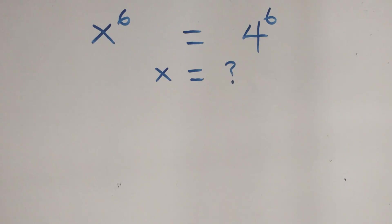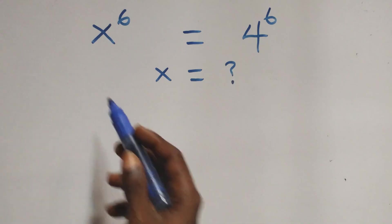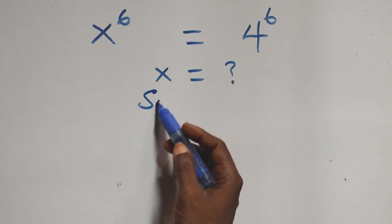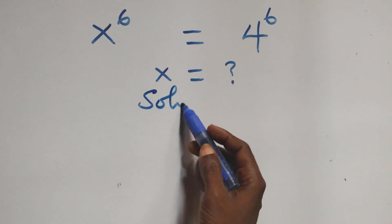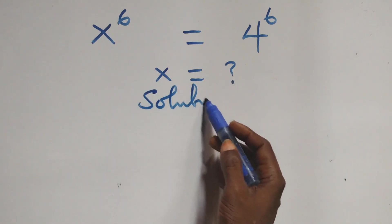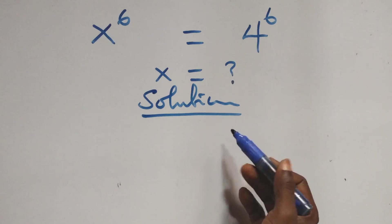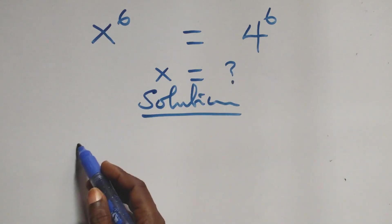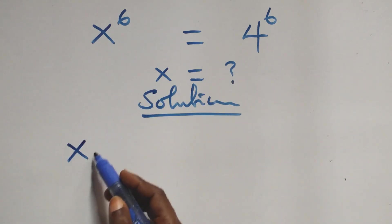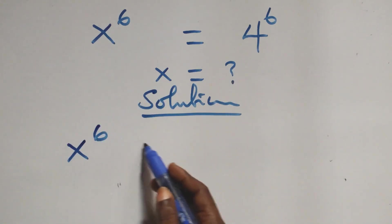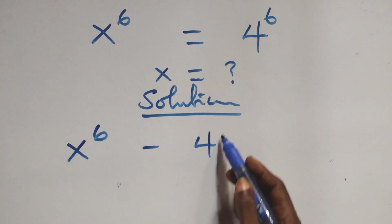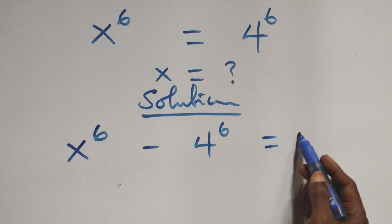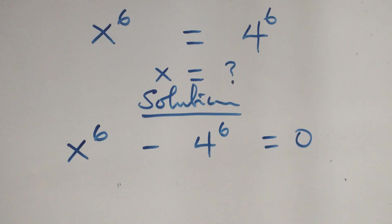Hello, you are welcome. How to solve this nice exponential equation. We take four raised to the power six to the left hand side and we have x raised to the power six minus four raised to the power six equals to zero.